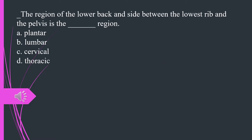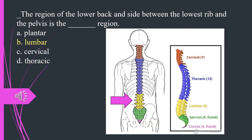The region of the lower back and side between the lowest rib and the pelvis is the what region? A. Plantar. B. Lumbar. C. Cervical. D. Thoracic. The answer is B. Lumbar.